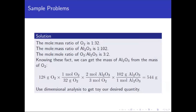This whole problem is about ratios and dimensional analysis. We can get the mass of Al2O3 from the mass of oxygen. Starting with 128 grams of oxygen, we convert grams of oxygen into moles of oxygen, then use the molar ratio of oxygen to aluminum oxide to get moles of aluminum oxide.